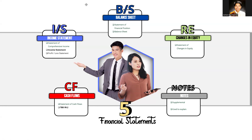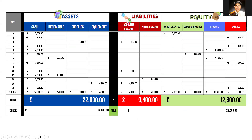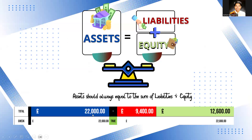The next step is to take a deep dive and apply it to our case study, which is Macy Consulting. To recap advanced transaction analysis: we go over each transaction, make sure each affects at least two accounts, and that it always balances. In the end, we proved that assets of $22,000 equals liabilities of $9,400 plus $12,600 of equity — so $22,000 equals $22,000.